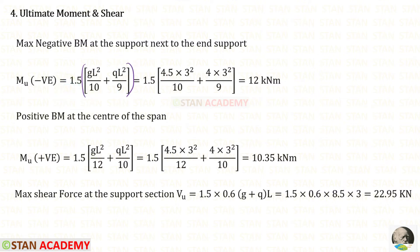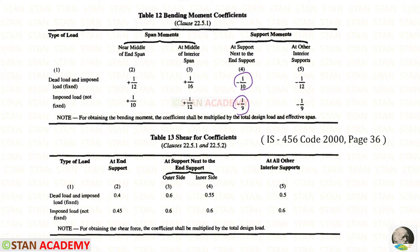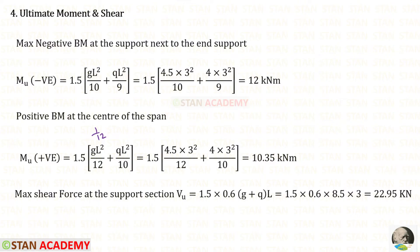We multiply by 1.5 to get the factored moment. After calculating, we get 12 kilonewton-meter. For the positive bending moment at the center of the span, the coefficients are 1/12 for dead load multiplied by GL², and 1/10 for live load multiplied by QL². The factored positive moment works out to 10.35 kilonewton-meter.